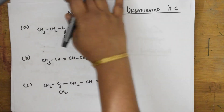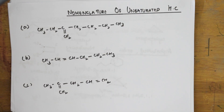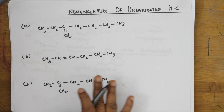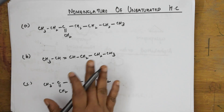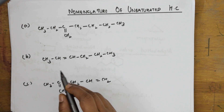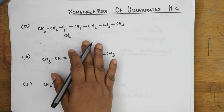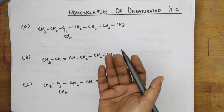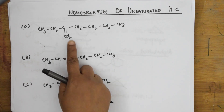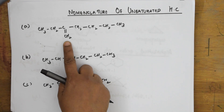Now let's start with the nomenclature of unsaturated hydrocarbons — alkenes and alkynes. Whenever a compound is given, first identify the longest possible carbon chain as the parent chain. We will also see which numbering approach is correct and which is wrong.